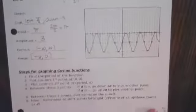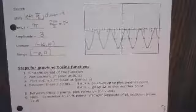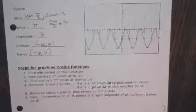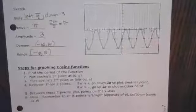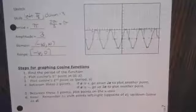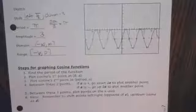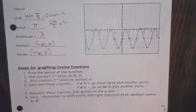Now we'll try some cosine ones. The instructions are basically the same — you find the period, then plot the cosine's first point at zero and the A value, then plot the second point at the period and the A value. In between those two points you go up or down in the middle depending on the sign of A.